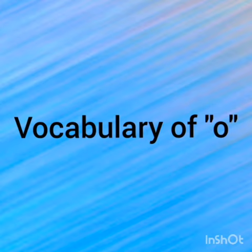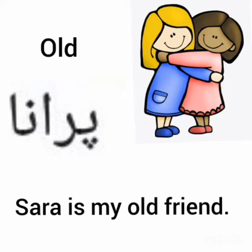Today I will tell you some words starting with the letter O. آج میں آپ کو O سے شروع ہونے والے کچھ الفاظ بتاؤں گی۔ The first word is 'old'. Old کا مطلب ہوتا ہے پرانا — old means old/past.